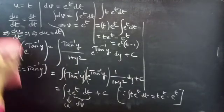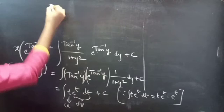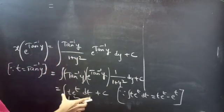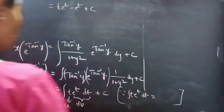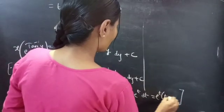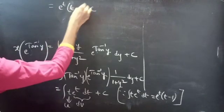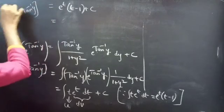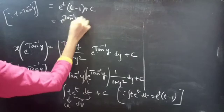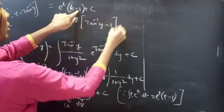Now replacing the integral, we get t·e^t − e^t + C, which equals e^t(t − 1) + C. Since t = tan⁻¹y, replacing t back gives e^(tan⁻¹y)·(tan⁻¹y − 1) + C. So x·e^(tan⁻¹y) = e^(tan⁻¹y)·(tan⁻¹y − 1) + C.